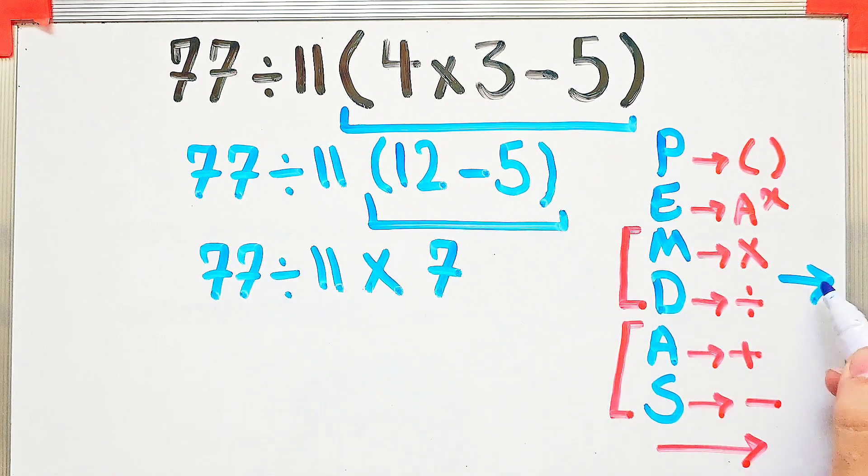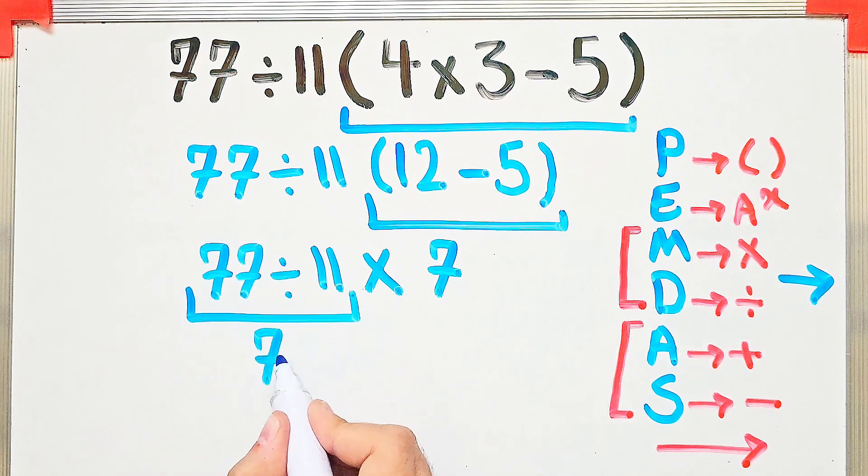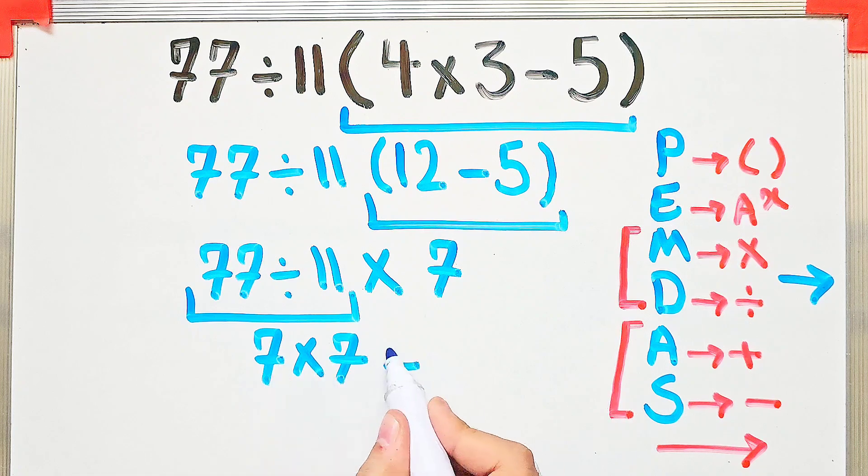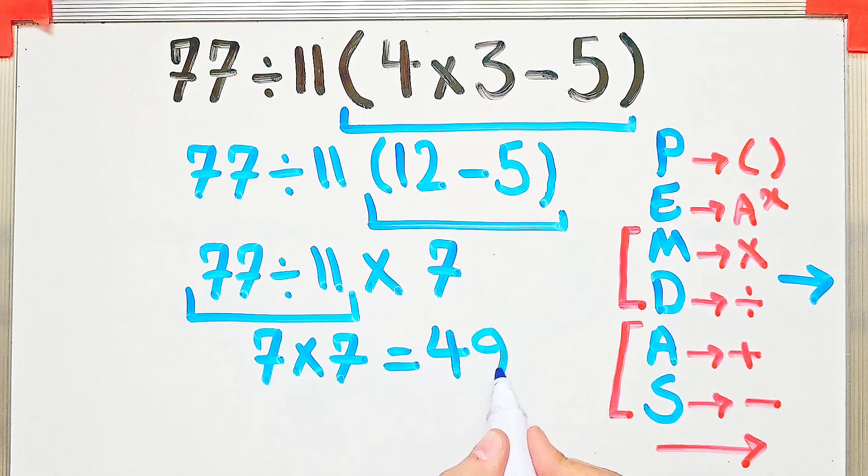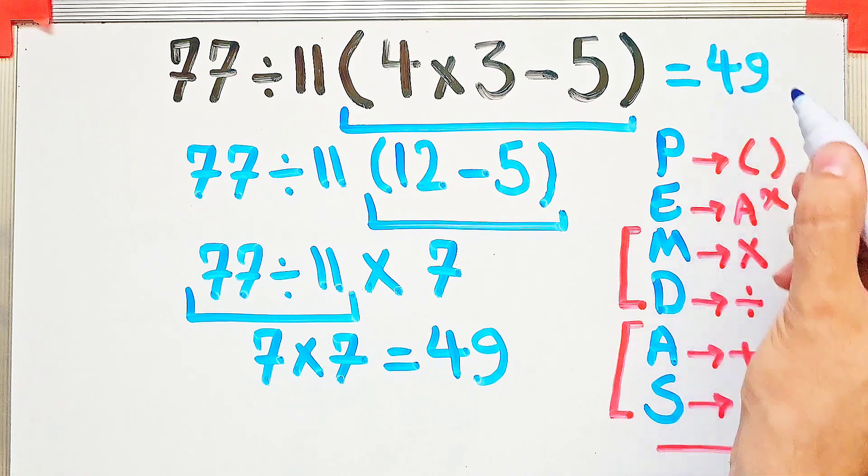And 7 times 7 equals 49. The final answer is 49. Thanks for watching guys, please subscribe to the channel and leave a comment. Goodbye!